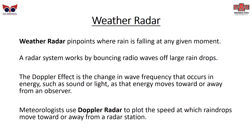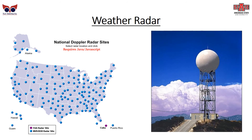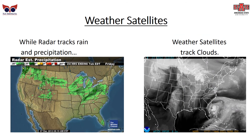Weather radar pinpoints where rain is falling at any given moment. A radar system works by bouncing radio waves off of large raindrops. The Doppler effect is the change in wave frequency that occurs in energy — such as sound or light — as the energy moves toward or away from an observer. Meteorologists can use Doppler radar to plot the speed at which raindrops are moving toward or away from a radar station. You can see here the layout of national Doppler radar sites in the U.S., as well as a typical Doppler tower — inside the ball is the actual radar emitter. Radar tracks rain and precipitation, shown on the left, while weather satellites track actual cloud cover, shown on the right.